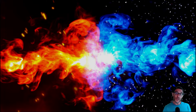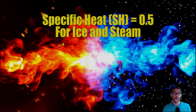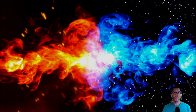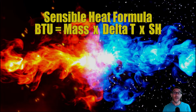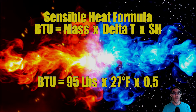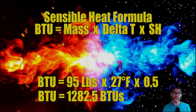There is one more important piece of information we need before the calculation: the specific heat capacity of ice, which is 0.5 — incidentally the same as steam. Now we plug all these numbers into our BTU formula, which is mass times delta T times specific heat. So we have 95 pounds times 27 degrees Fahrenheit times 0.5. To heat this block of ice up to its melting point, we will consume 1,282.5 BTUs. Let's write that number down, because we'll need it at the very end.